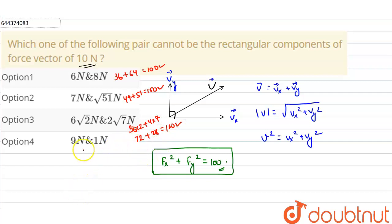But in the fourth option it will be 81 plus 1, that is 82, which is not satisfying the relation. So this will not be the rectangular pair of the force vector 10 newton. So the correct option for us is option number four.